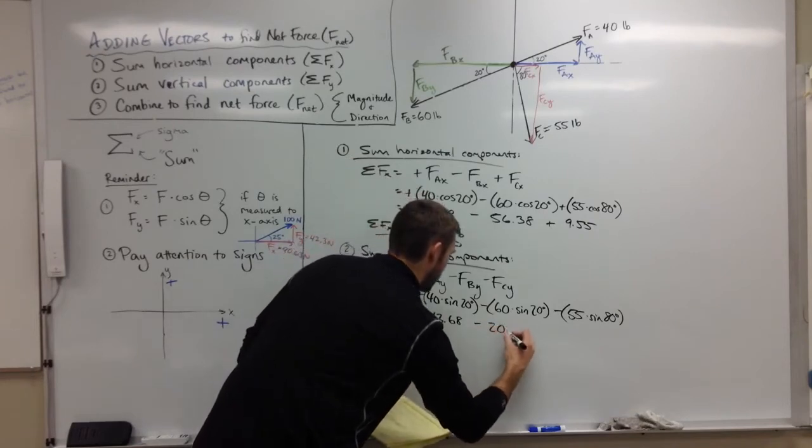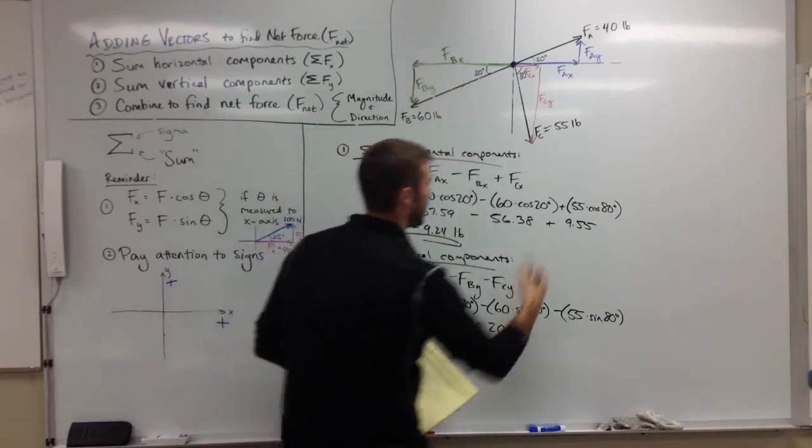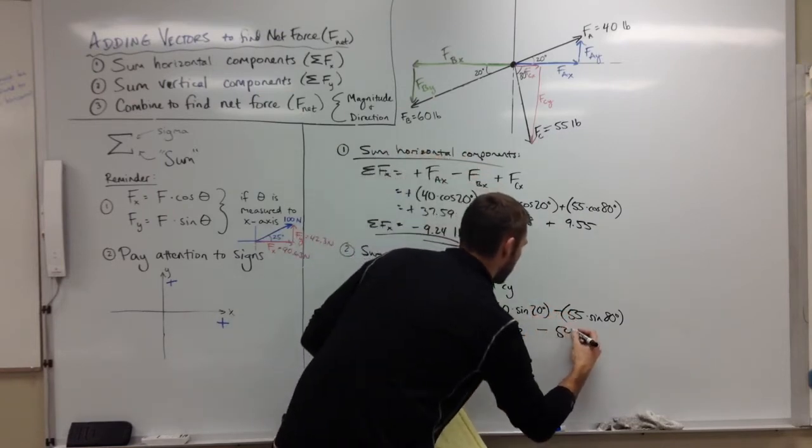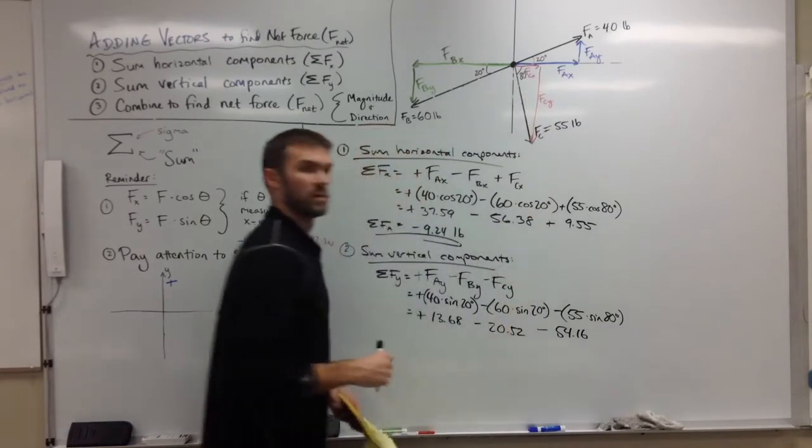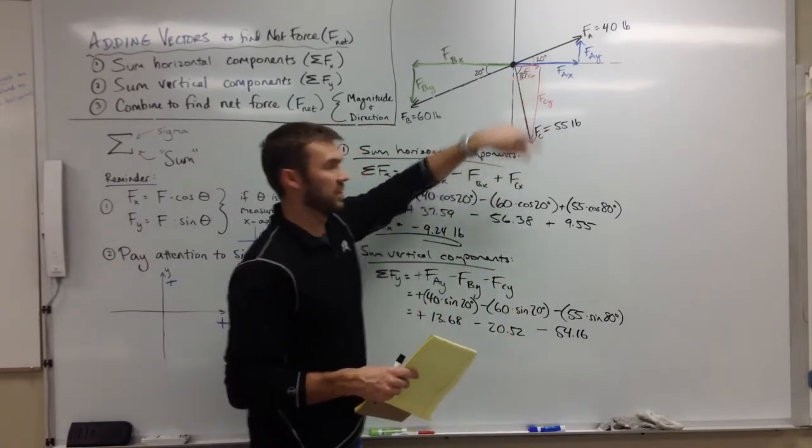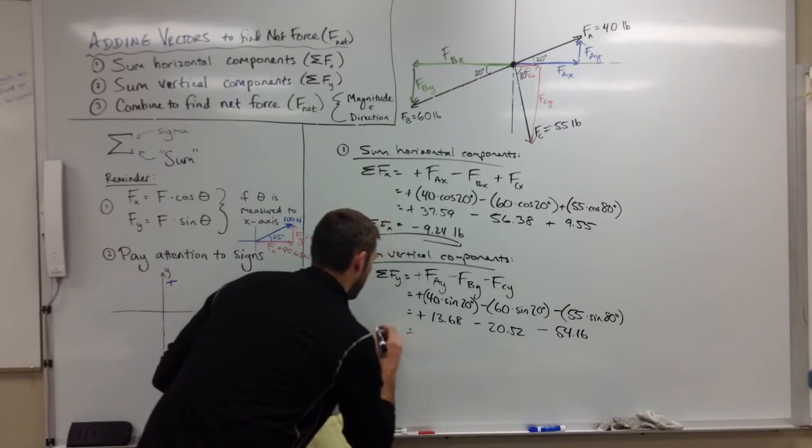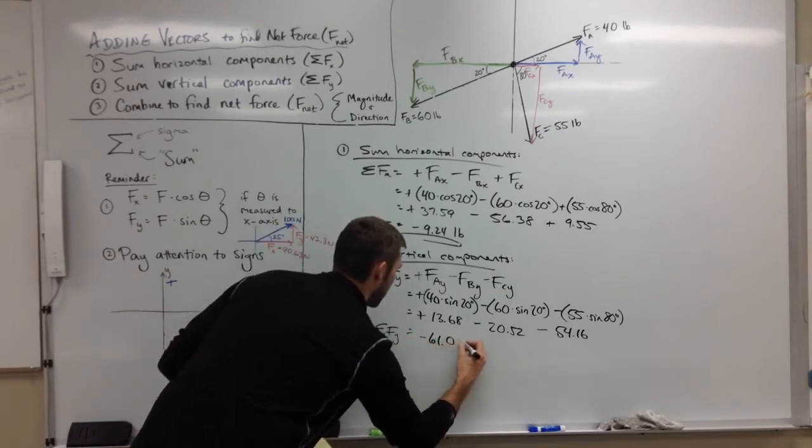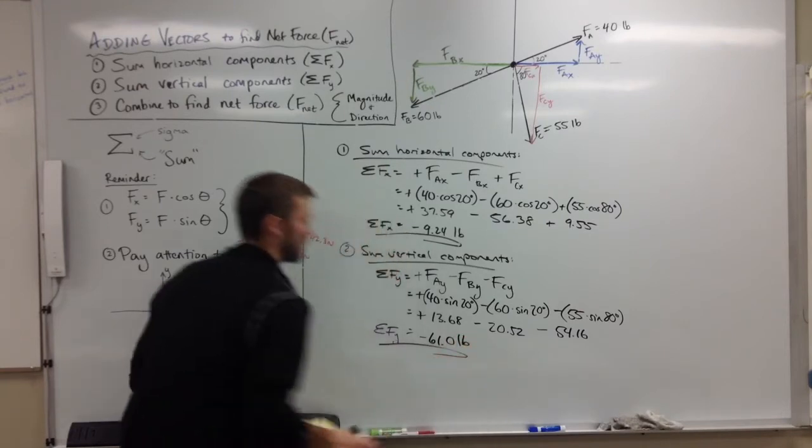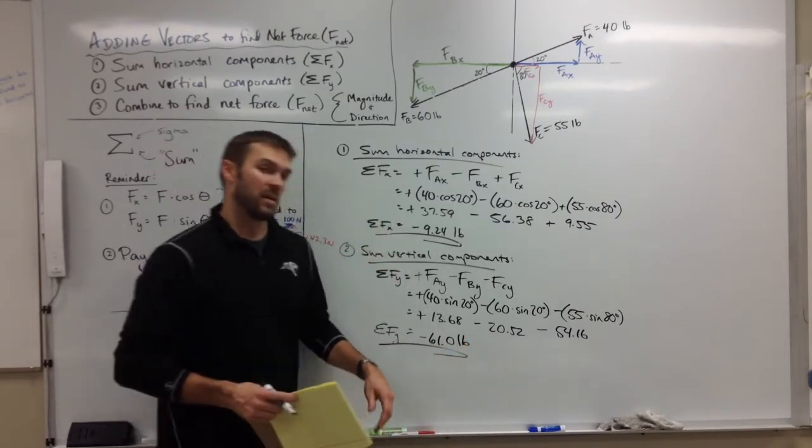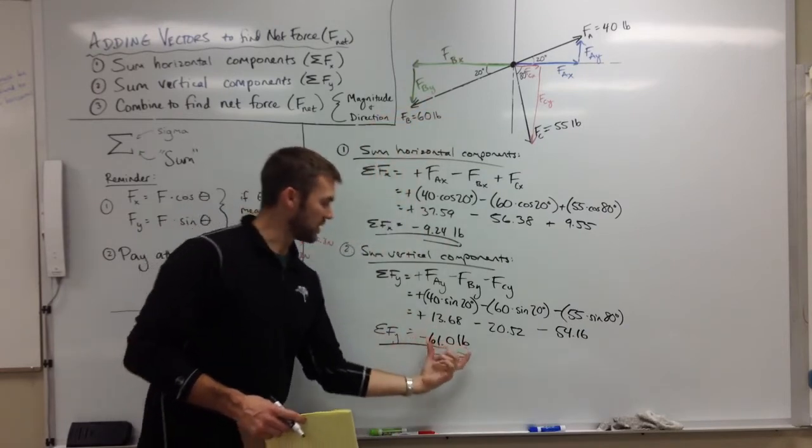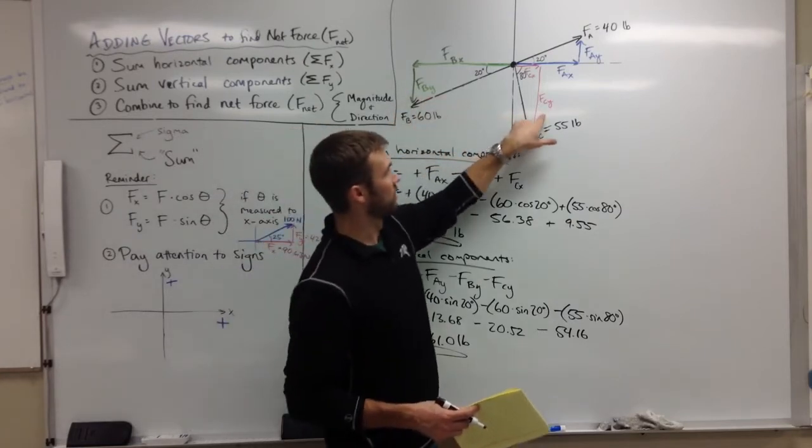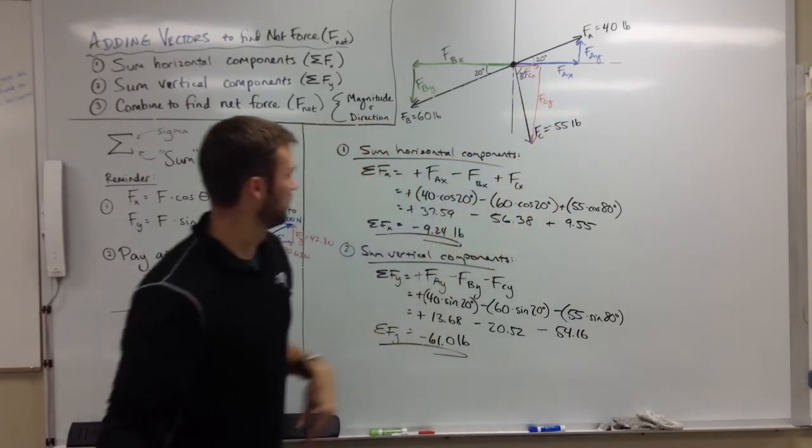This is 20.52 pulling it down, and we have 54.16 pulling it down there. So the majority of this is pointing downward as we'd expect - it's an 80 degree angle there. That gives us an overall sum of the force in the y direction of negative 61 pounds. And again, what's that mean? It means the overall y component of the net force is 61 pounds in the downward direction. Again, we thought the downward pulls would beat the upward pull, and we were correct.